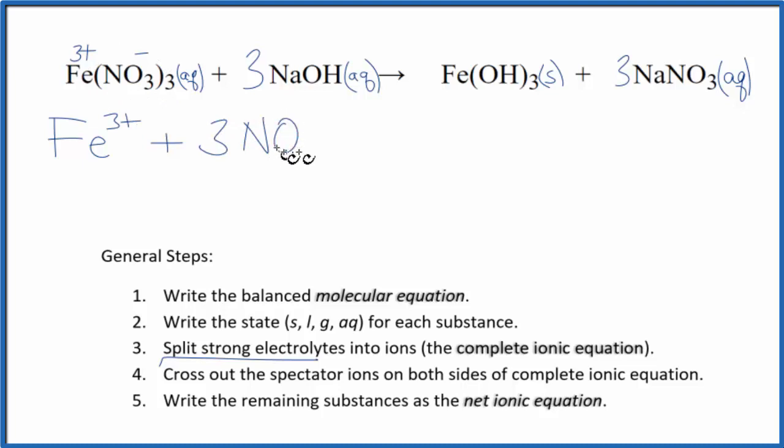Sodium is in group 1, has a 1 plus charge. Then this hydroxide ion, that has a 1 minus. So we have our three sodium ions and three hydroxide ions. Oops. There.